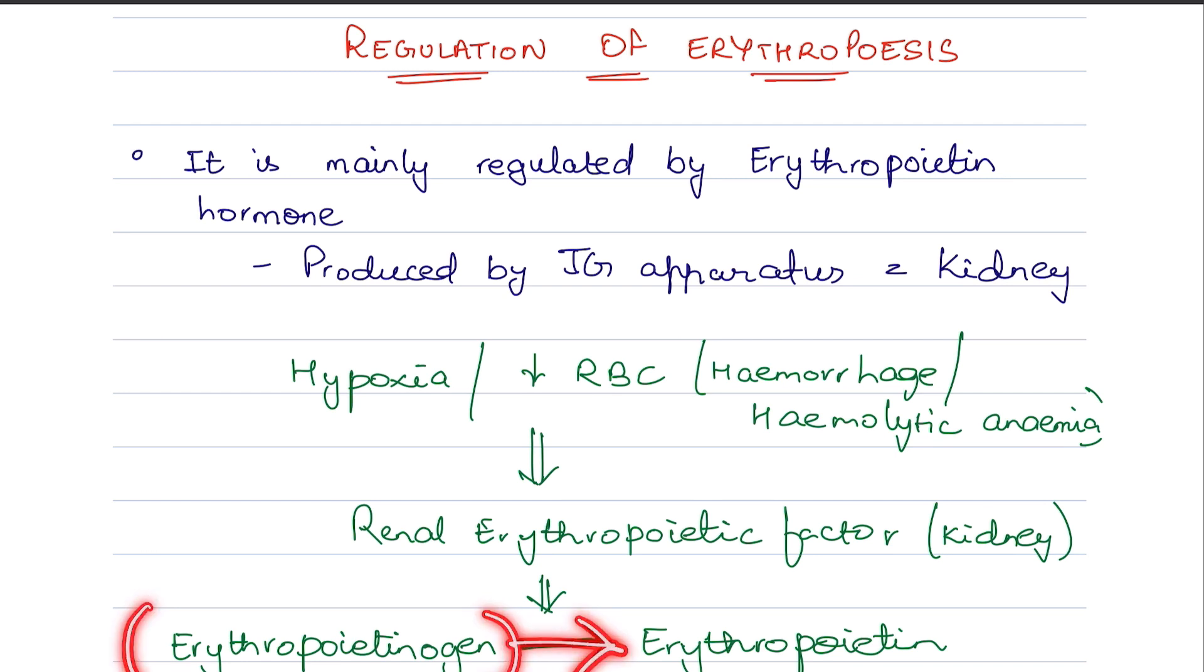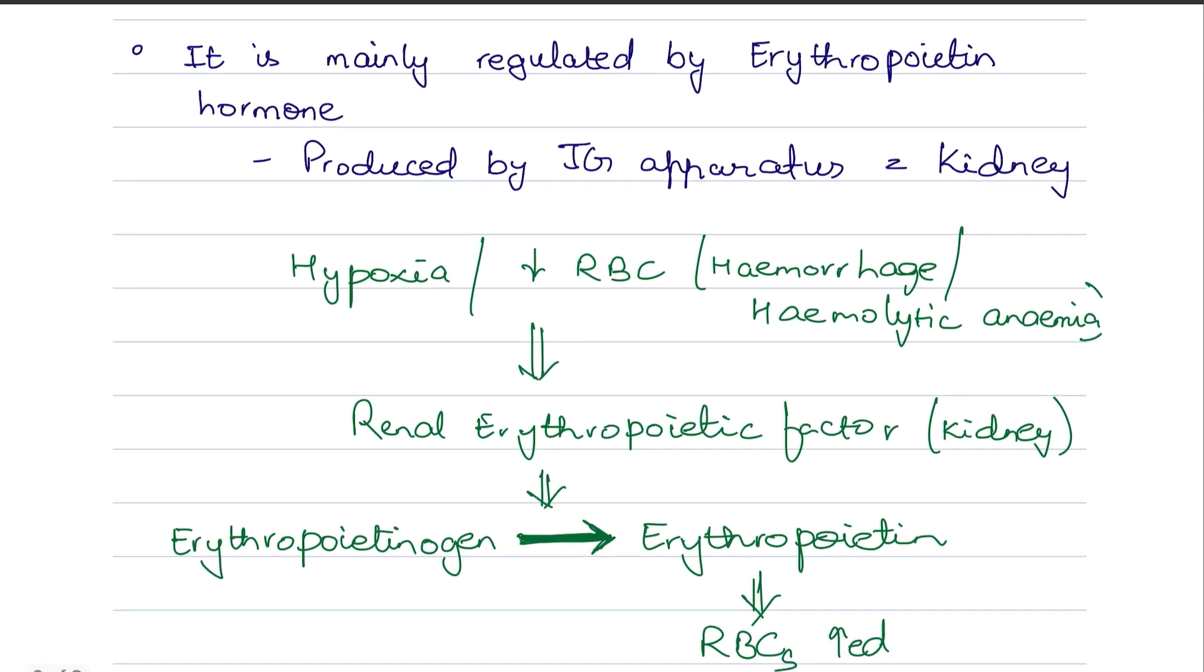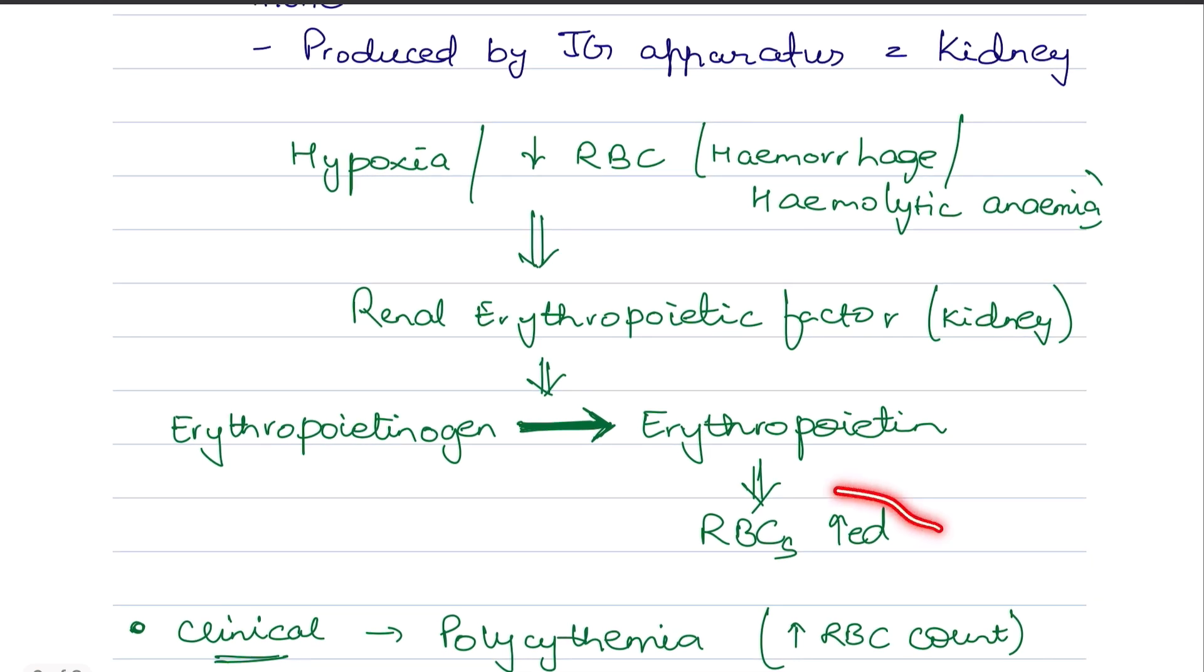Inactive form will activate the RBC production. Now what is the result? The RBC count will increase. So the clinical thing is polycythemia.